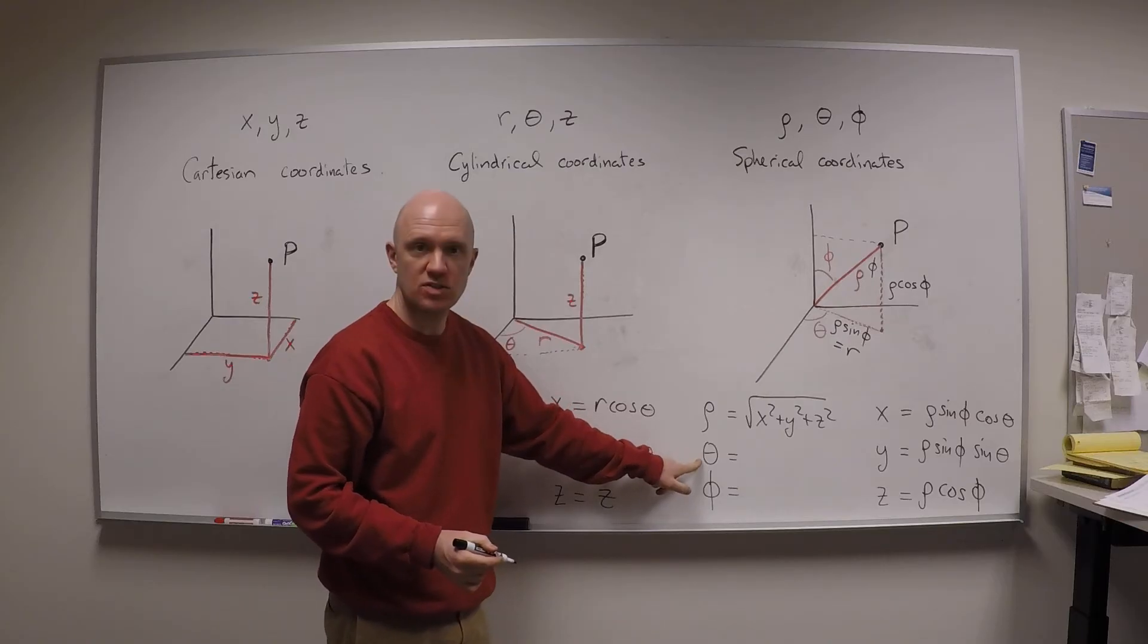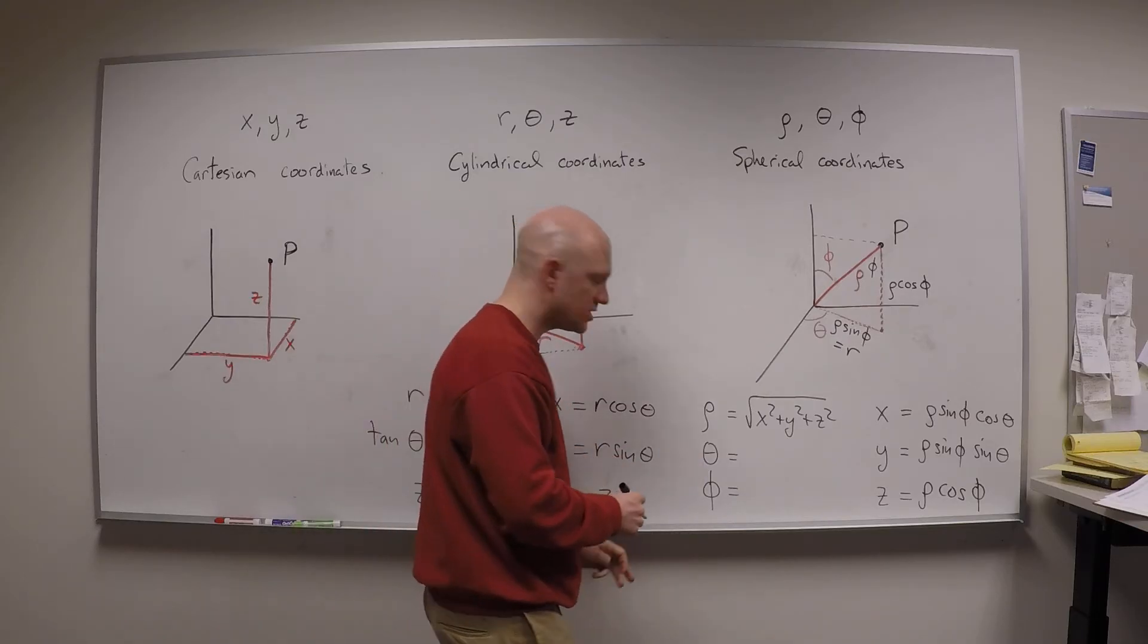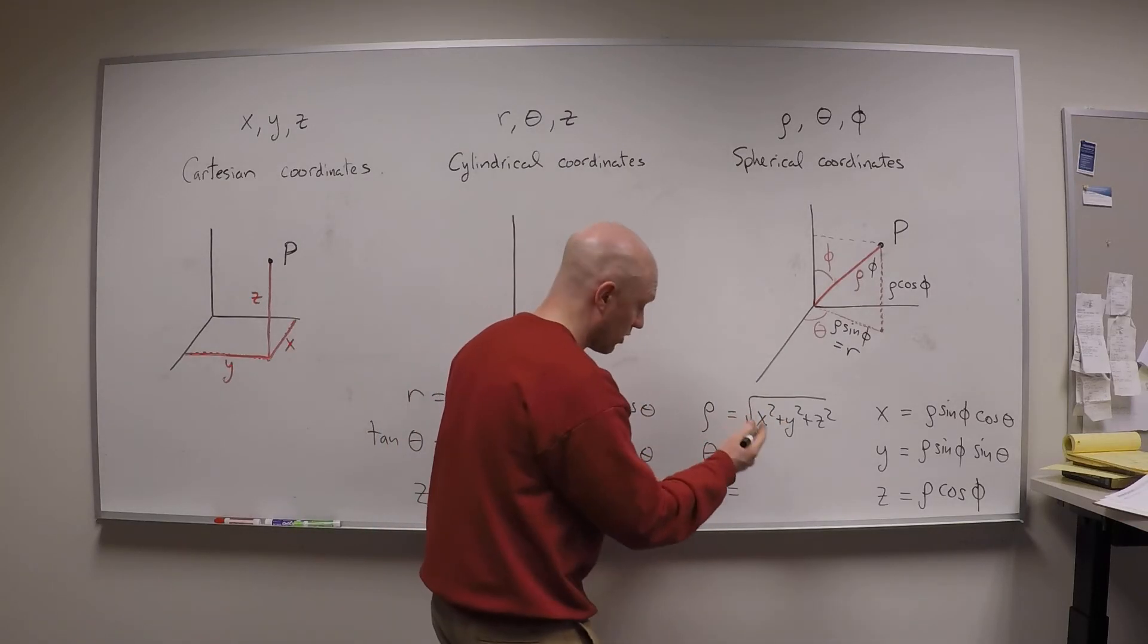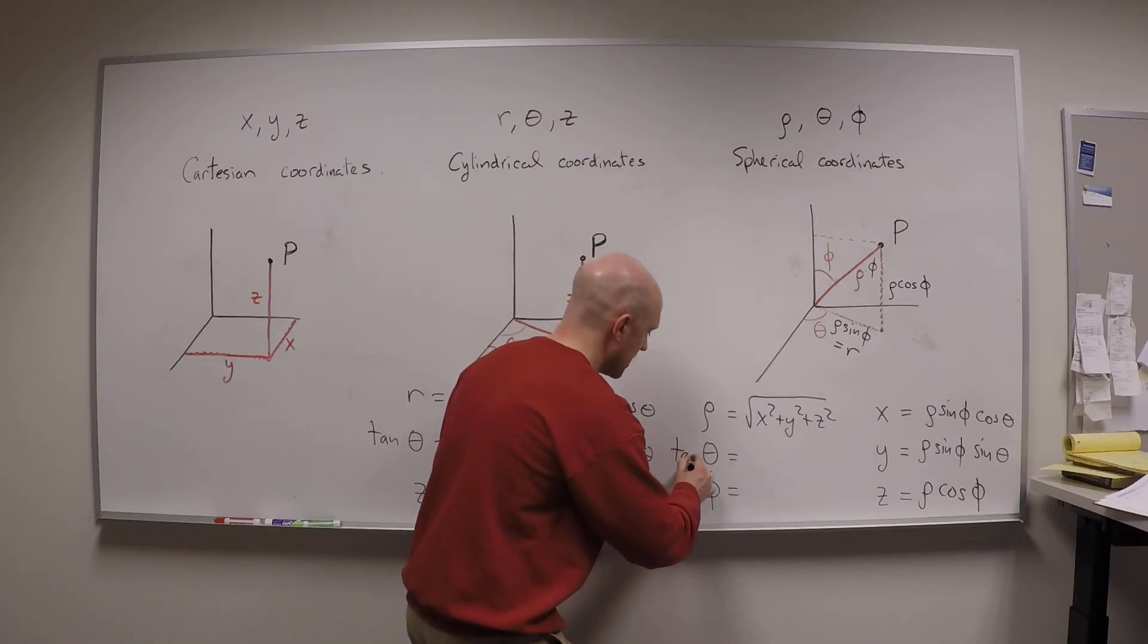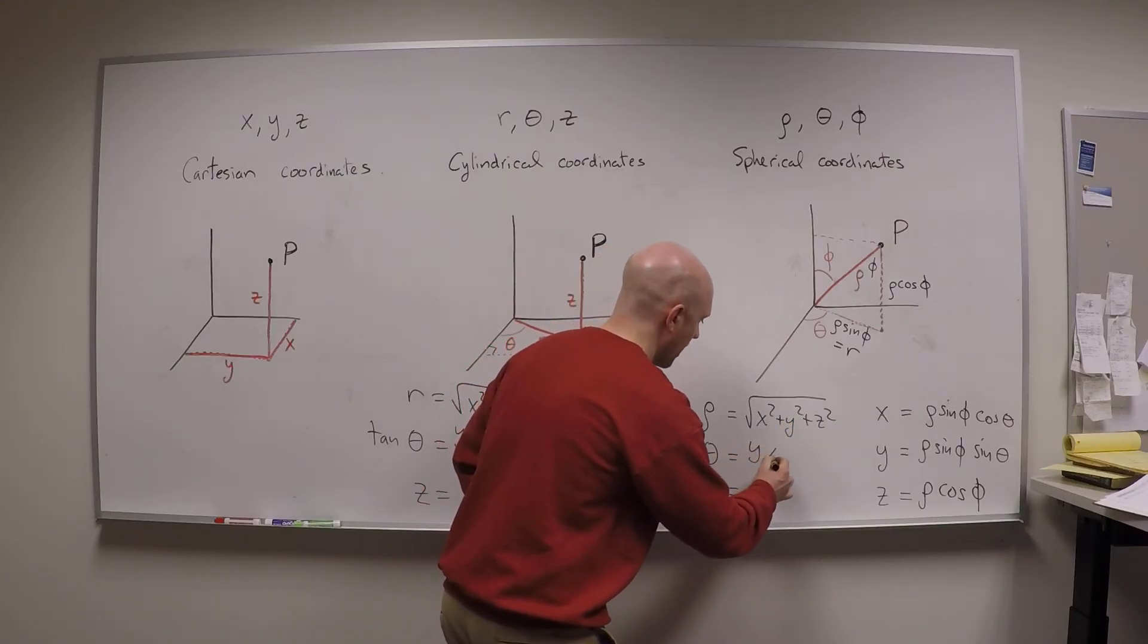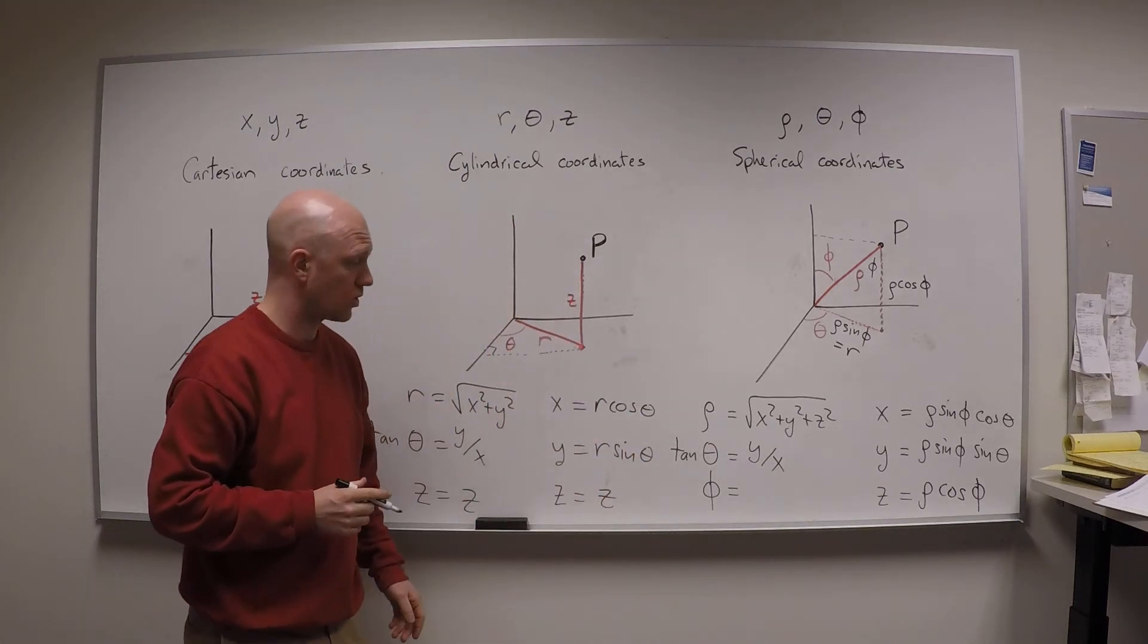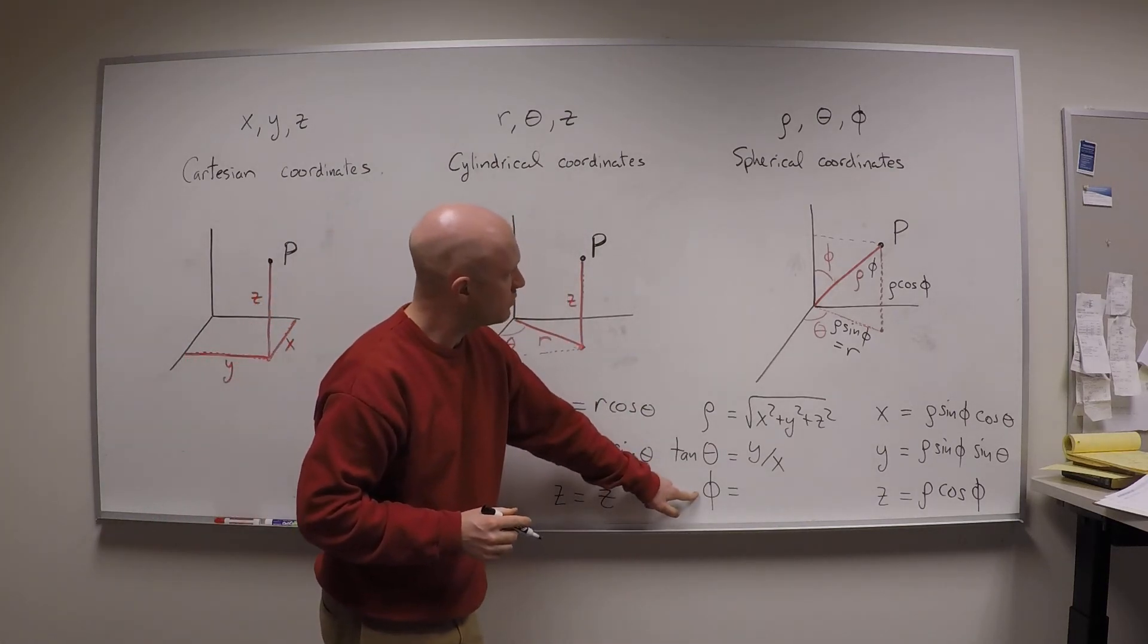Now theta, I can get just the same if I know what x and y and z are. In fact, I don't care what z is. I know that the tan of theta is equal to y over x, just like it was in cylindrical coordinates.